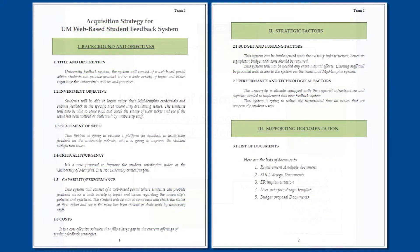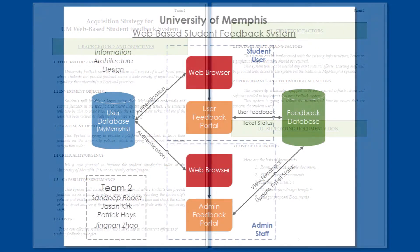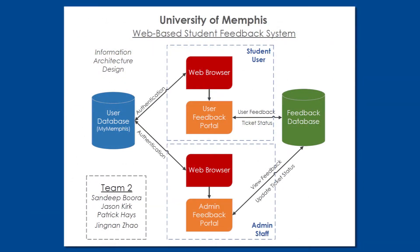Our group then created an acquisition strategy that detailed the specific benefits and hurdles to implementing the student feedback system. Finally, an architecture design diagram was created to help further elaborate our perspective of the system and how the components of the system will work together.